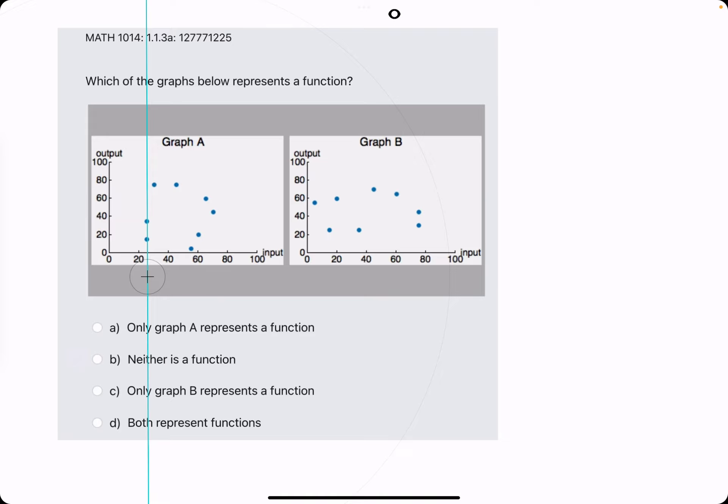So for one input, we're getting two outputs. In other words, two dots on the same vertical line. That means graph A is not a function.